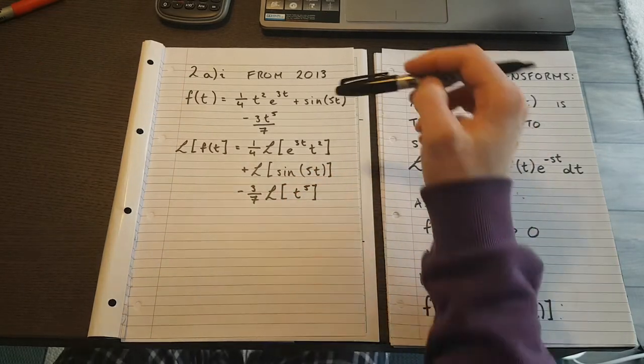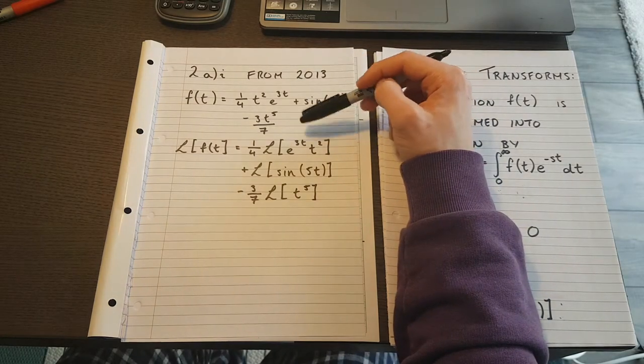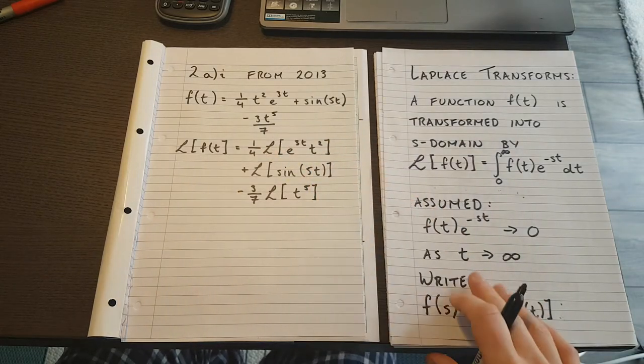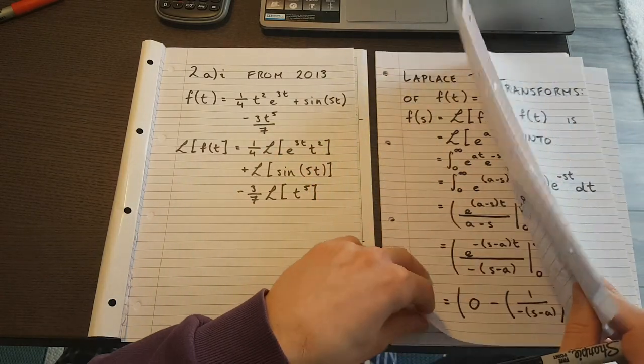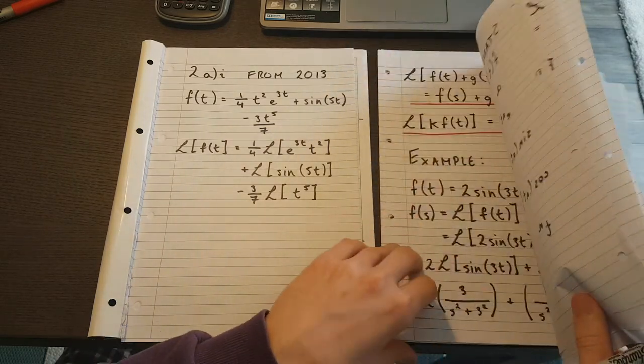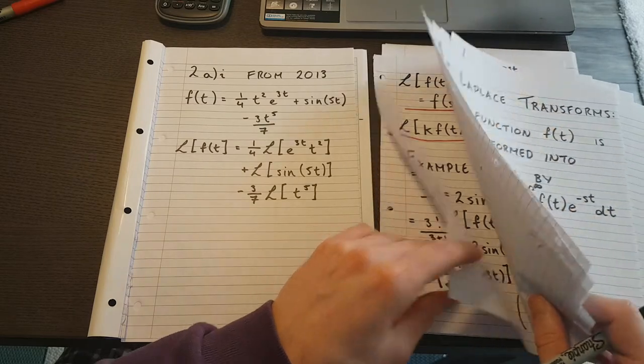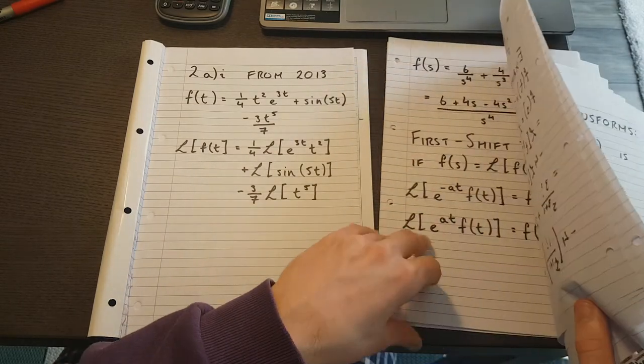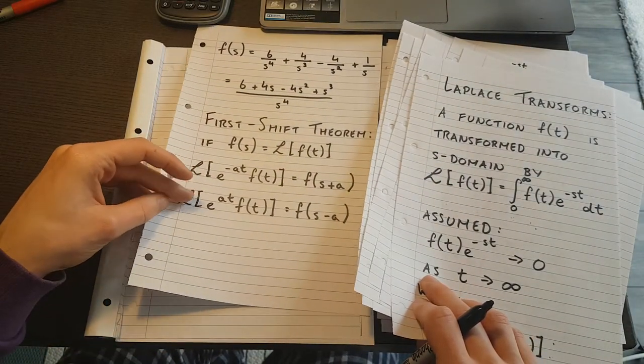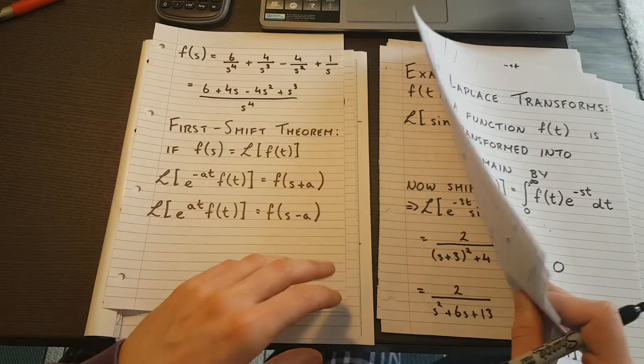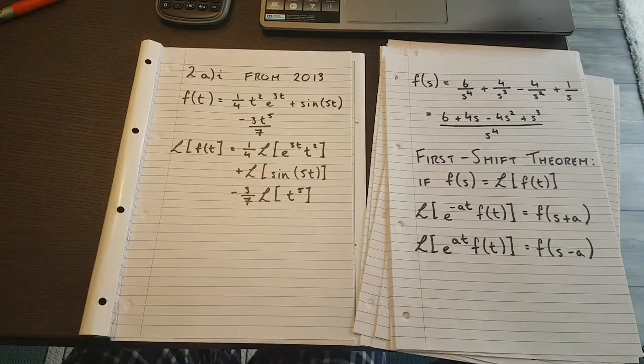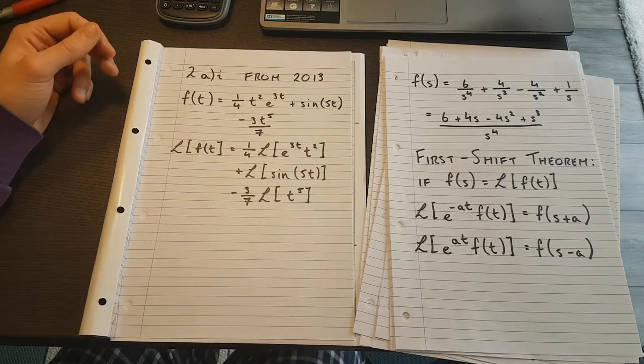And you may notice that I did something here, I changed the order of the t² and e^(3t) when I wrote it down, and the reason that I did this is hopefully to improve your recognition. What I'm looking at here is of course my first shift theorem, which said that if I have an e^(at), I'm able to break that out or just deal with it as a shift.